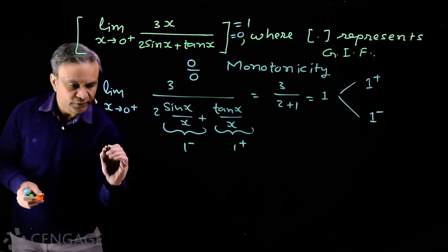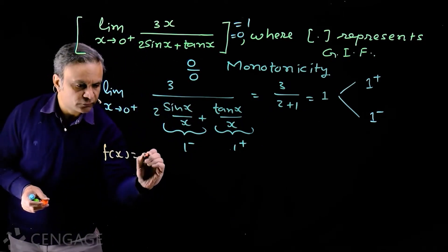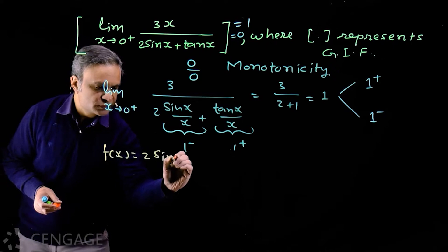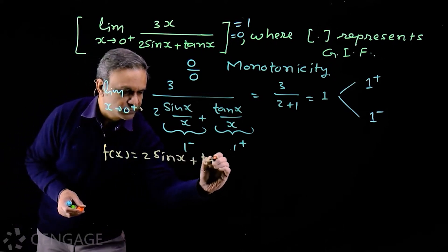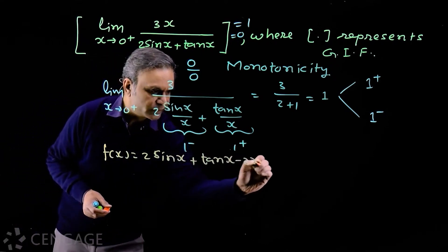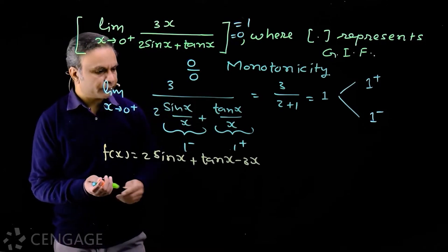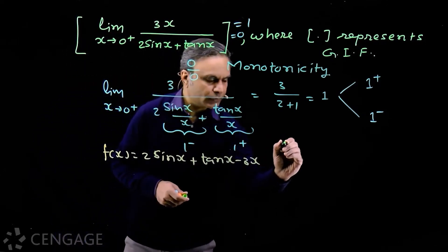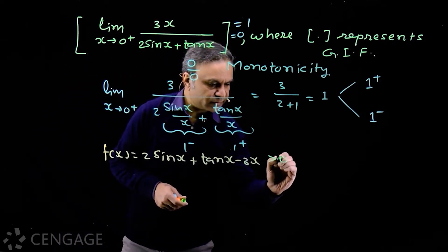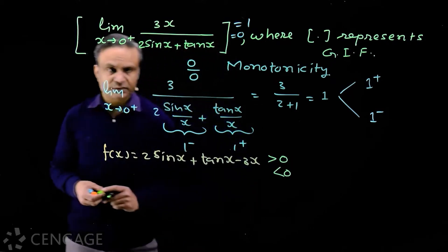Now what we do, we consider function f(x) = 2 sine x + tan x - 3x. Actually we want to check whether this is greater than zero or less than zero.